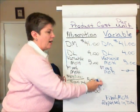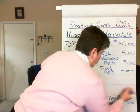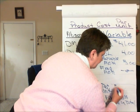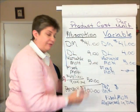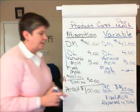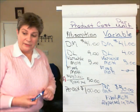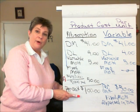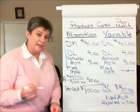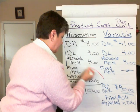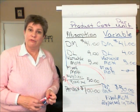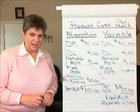So our product cost under variable costing is $50 of variable cost. Notice the difference between the two: under absorption costing our product cost is $100 per unit, under variable costing it's $50. The difference between the two is due to the way we treat fixed manufacturing overhead, and only fixed manufacturing overhead.